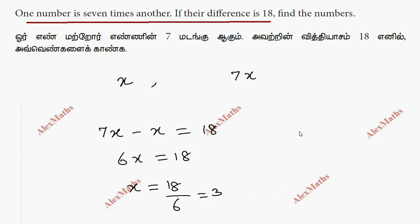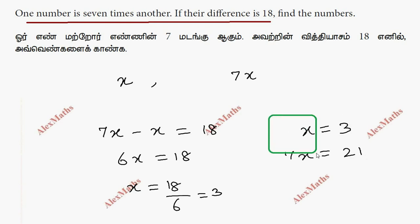One number is x, this is 3. Another number is 7x, so 7 times 3 is 21. So, the two numbers are 3 and 21. Here we go.